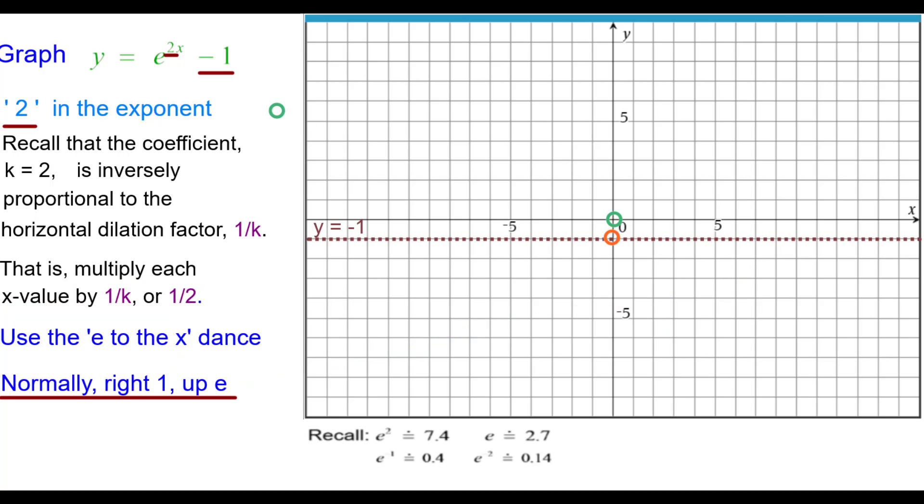Then we go right 1 up e. In this case, we're going to go right 1 half up e, which is about 2.7. Right 2 up e squared, but in this case we're going to go right 1 up e squared, which is about 7.4. Half of 2 is 1.